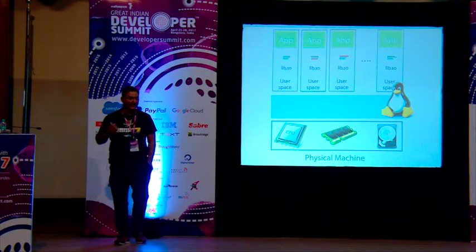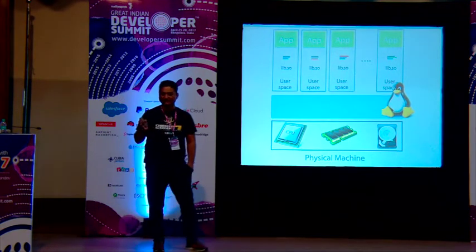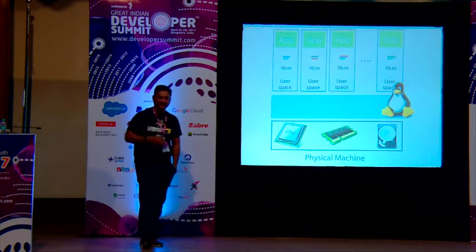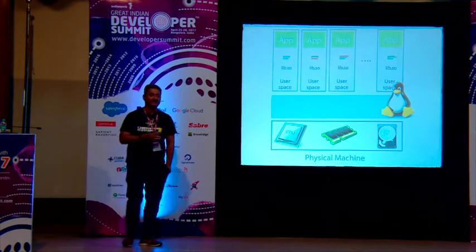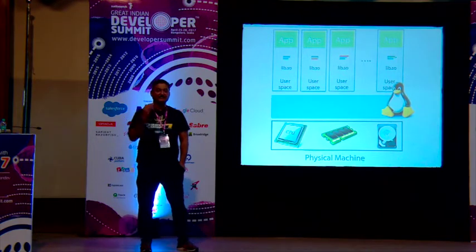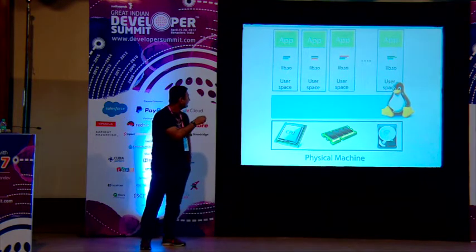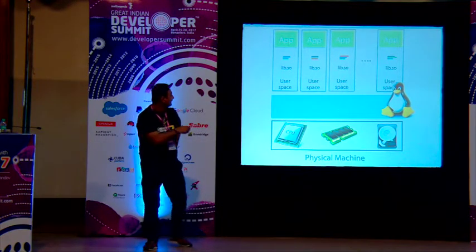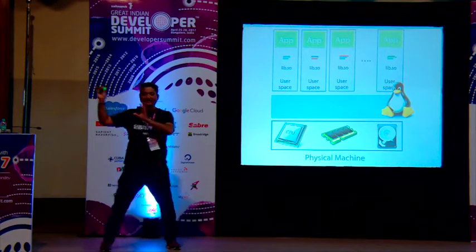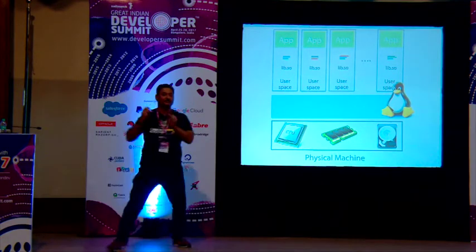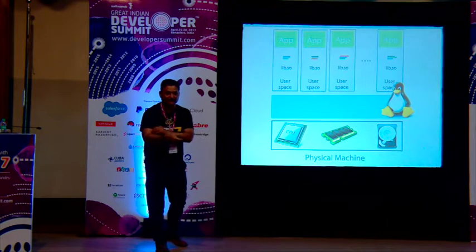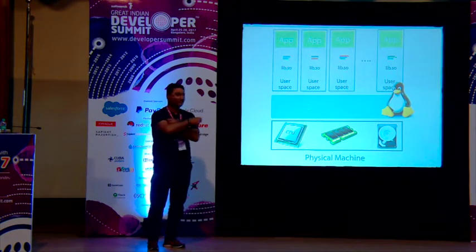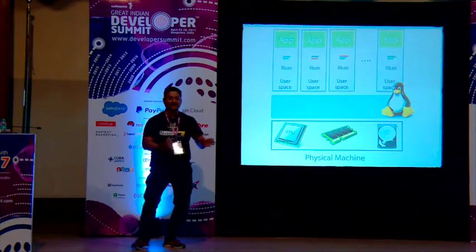I'd suggest looking at the 12-factor app methodology. All configuration files must reside outside the VM where your application is running — because if that VM goes down, you should be able to get configuration from an external source. If you're writing to a disk, you don't want to write it to a Docker container; you have to write it to a particular external location. You have to mount the drive.